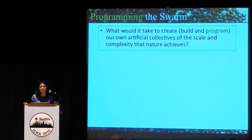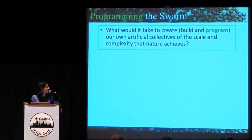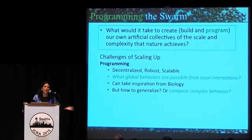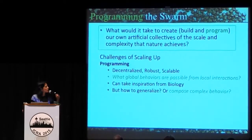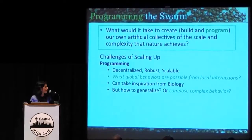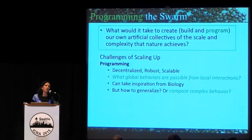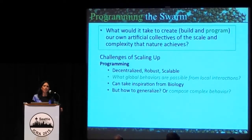The next challenge is programming. How do we get from programming three or four robots to programming a large group? Ideally we want the same properties as biological systems — decentralized, robust if you take out any robot, scalable because each one only does local interactions. But we don't actually know what global behaviors are possible from local interactions. Where's the boundary between decentralized and hierarchical? From my perspective, I try to find out how far we can go with a decentralized system, but we're still discovering that boundary.